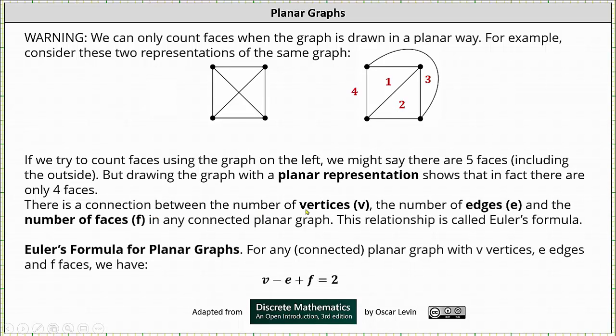And there is a connection between the number of vertices v, the number of edges e, and the number of faces f in all connected planar graphs. This relationship is called Euler's formula. Euler's formula states for any connected planar graph with v vertices, e edges, and f faces, we have v minus e plus f equals two. Again, this is for all connected planar graphs.